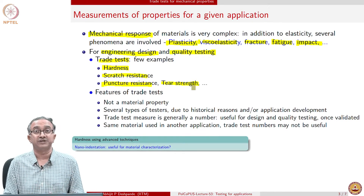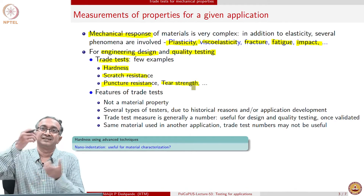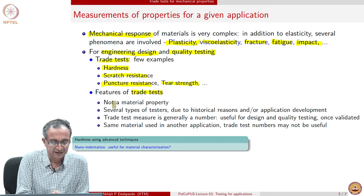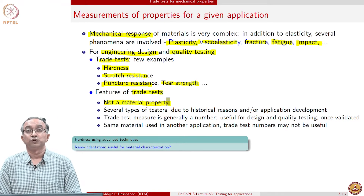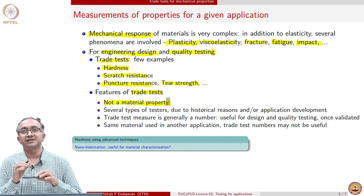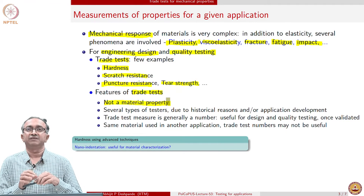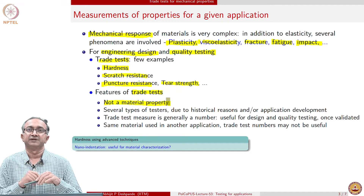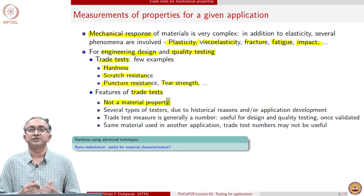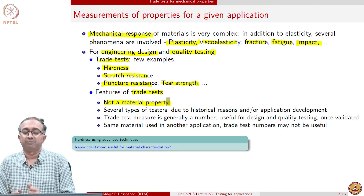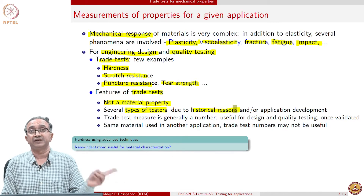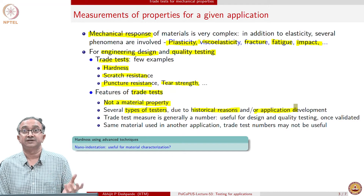These are all ways where mechanical properties are involved, but unlike a simple rod which we extend under very controlled conditions, the general features of trade tests are that they do not really measure a material property. The result depends on what geometry and what conditions are being used. Generally, trade tests follow a protocol where very specific geometry and conditions are specified. Only then is the resulting number useful, and this is again based on empiricism and engineering judgment developed over years of experience using polymers for a given application. Several types of testers exist due to historical reasons depending on the application area.